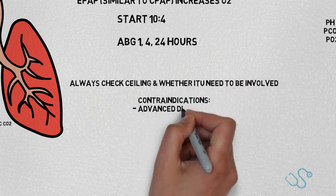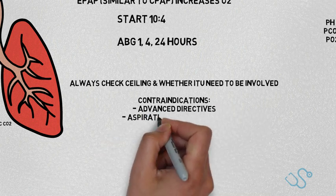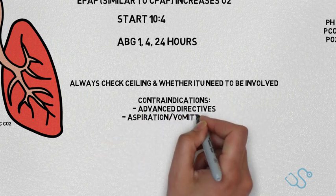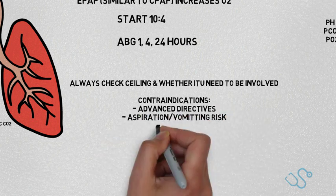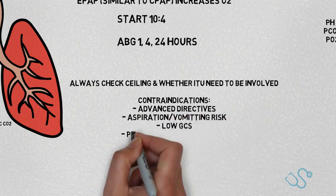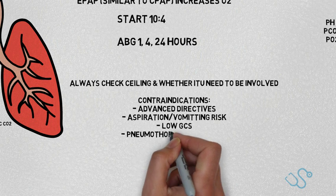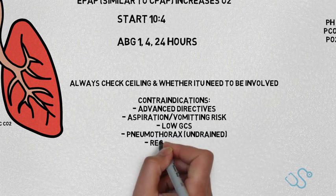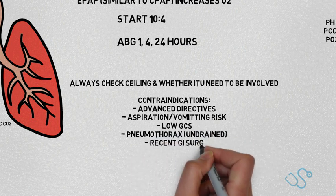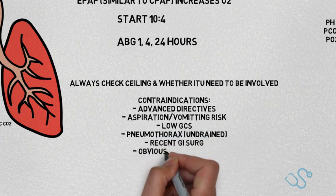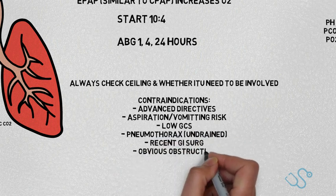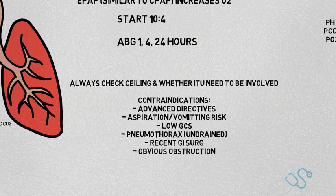Finally, in terms of contraindications for both CPAP and BiPAP: if the patient has an advanced directive, it's worth considering that. And if there's a risk of aspiration or vomiting, low GCS, an undrained pneumothorax, recent GI surgery, or an obvious GI obstruction, we shouldn't be using either CPAP or BiPAP.